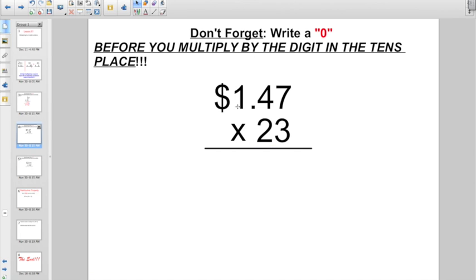I'm trying to multiply $1.47 times 23. Don't even worry about your decimal point in dollar sign. That's going to come in last. Don't even worry about this 2 to start off with. Just think of multiplying by the 3. So let's start off. 3 times 7, that's 21. I write down my 1, carry my 2. We've been doing this for weeks, haven't we?